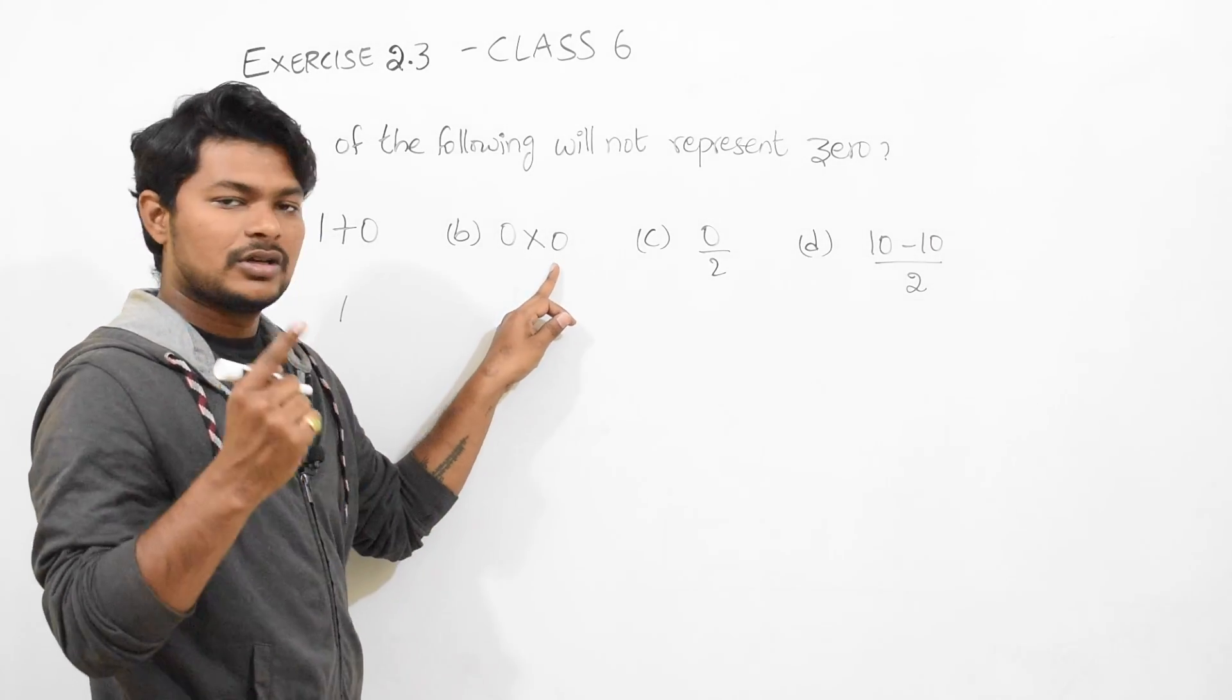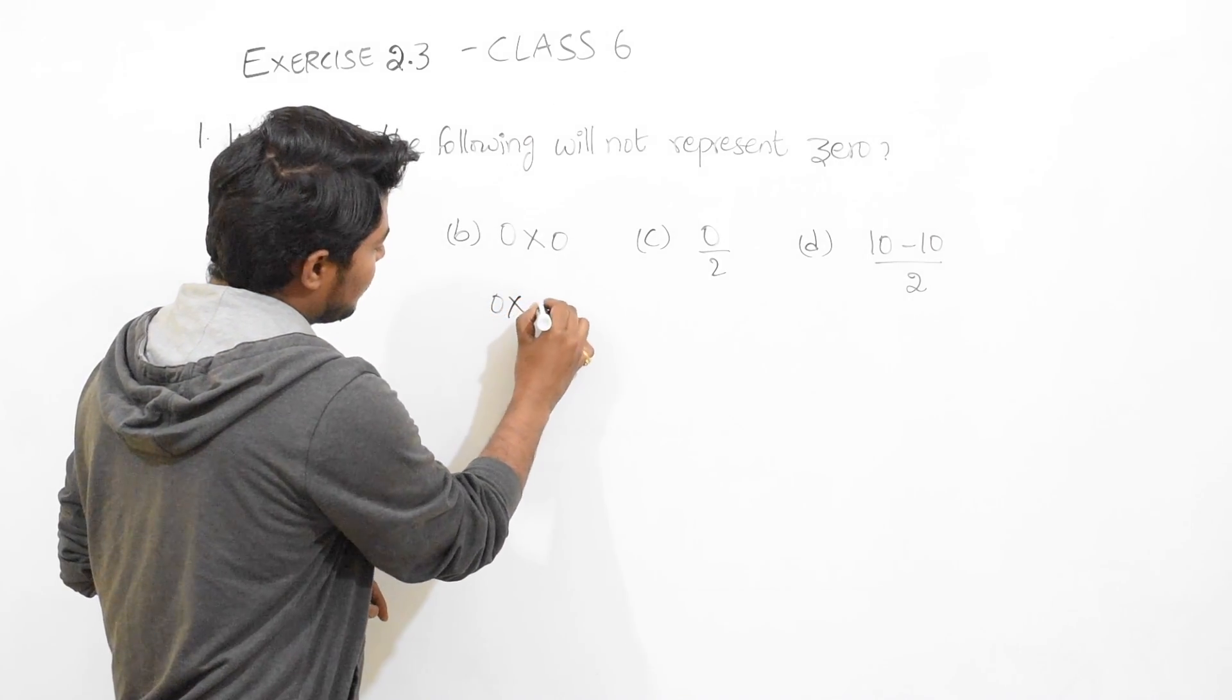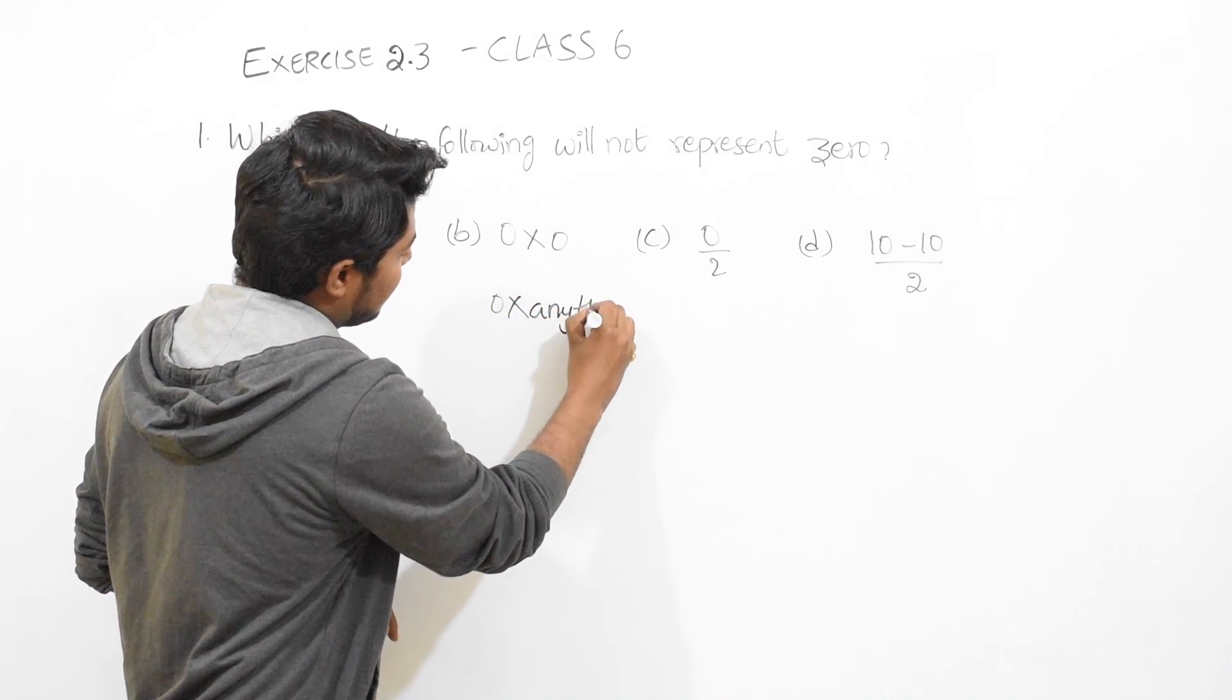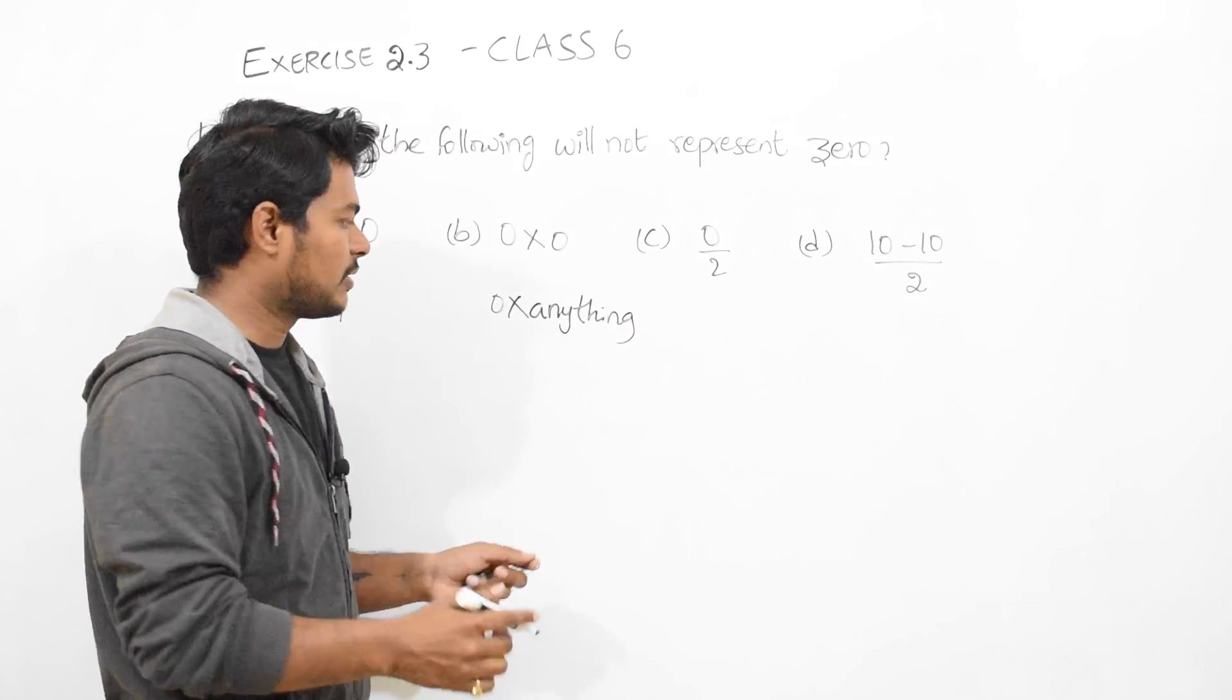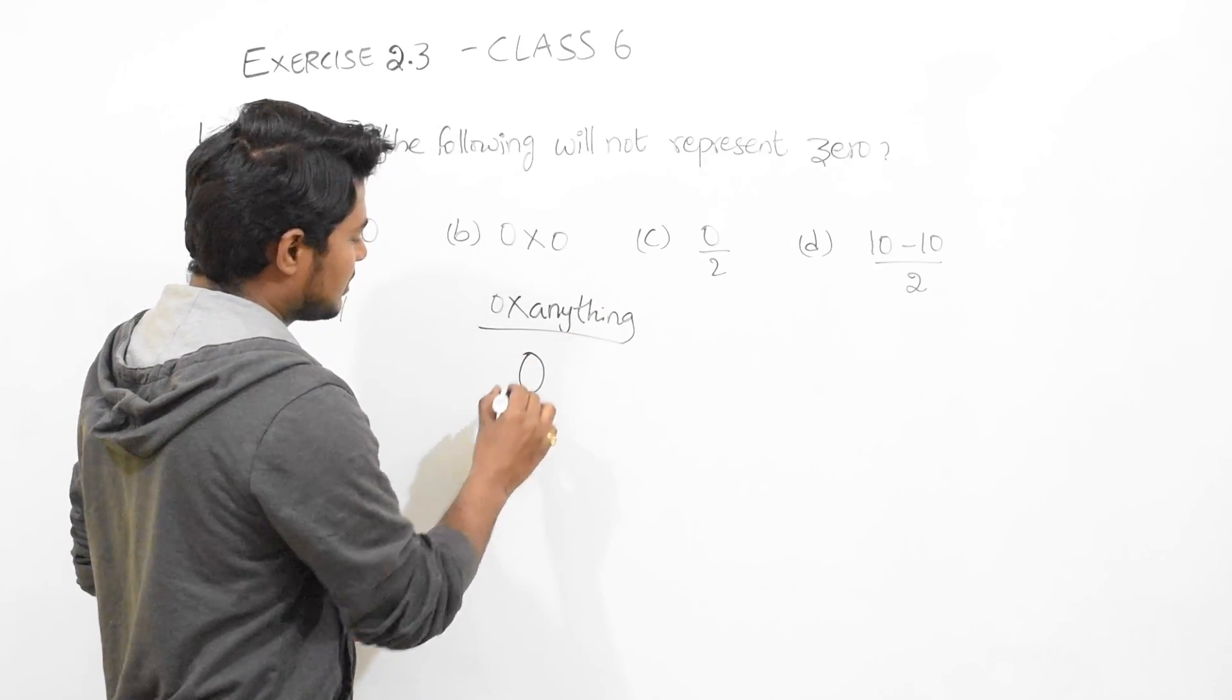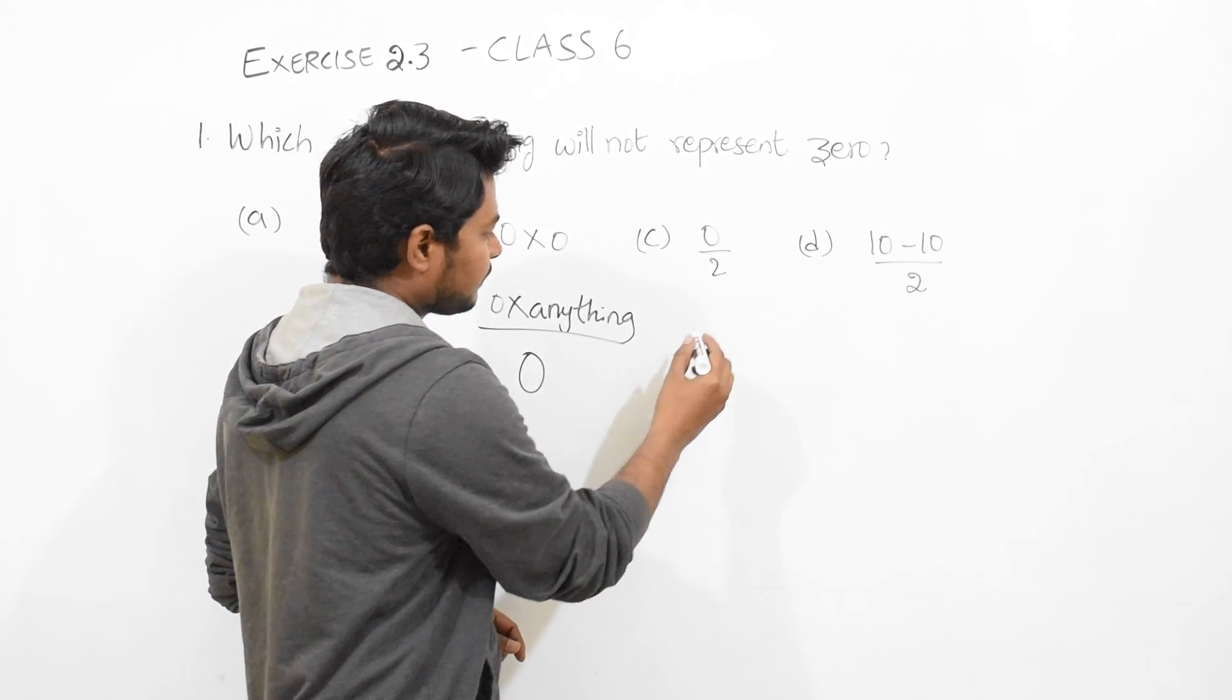Option B: 0 into 0. See, one thing is 0 into anything - 0 into anything, whether it's an integer, positive number, or negative number - 0 into anything will be 0. This thing you should remember.